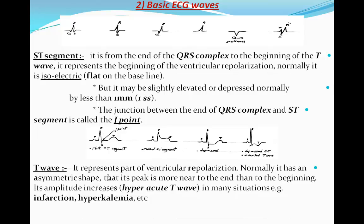The T wave represents part of ventricular repolarization. Normally it has an asymmetric shape — not semicircular — so its peak is closer to the end than to the beginning. When its amplitude increases markedly, we call it a hyperacute T wave, which is seen in situations like infarction or hyperkalemia. In infarction, the hyperacute T wave is due to localized hyperkalemia in the infarcted muscle, so hyperkalemia is the underlying mechanism.